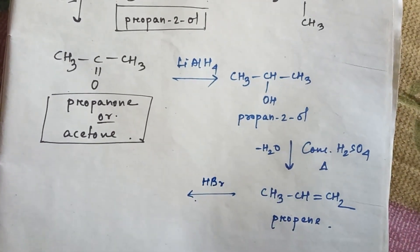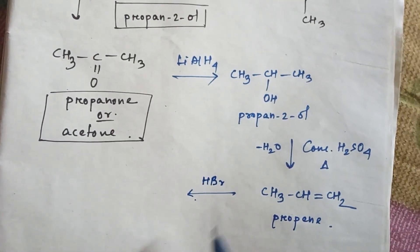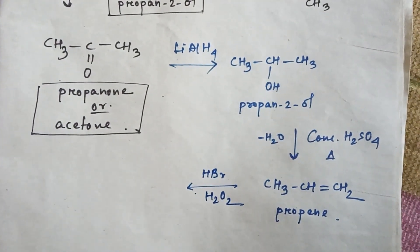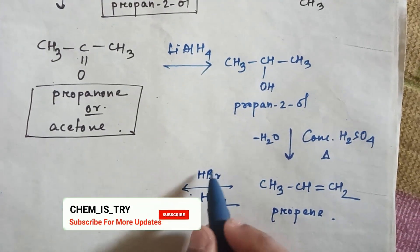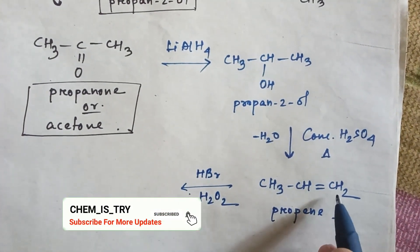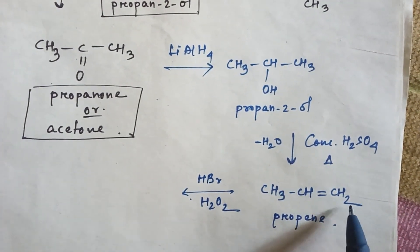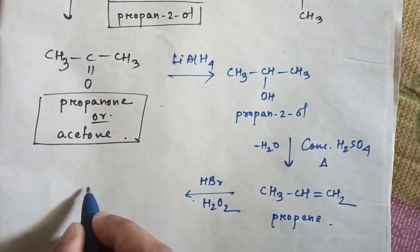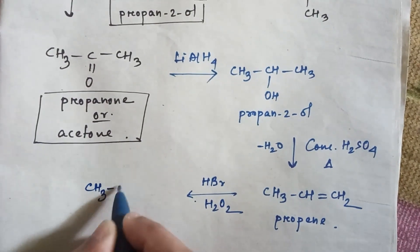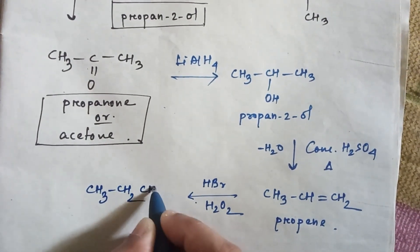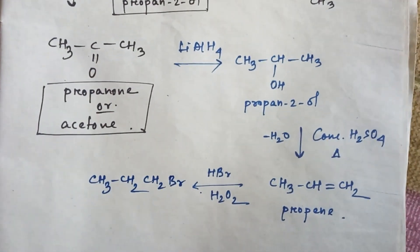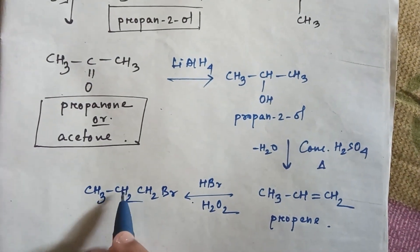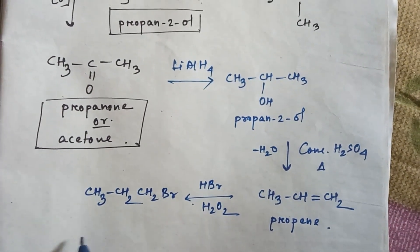Now in propene if you use HBr in presence of H2O2, that is anti-Markovnikov rules, then this bromine will add with the carbon atom where the maximum number of hydrogens is present. So the product will be CH3CH2CH2Br — this is 1-bromopropane.